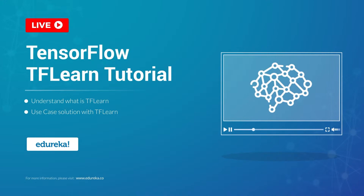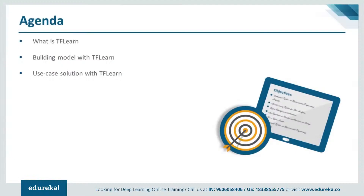Hello everyone, let's get started. We'll be discussing a few things about TF-Learn, which is a wrapper. The agenda covers: what TF-Learn is, building models in TF-Learn, and three use cases — MLP, CNN, and RNN. We also have examples for autoencoders and GANs. Additionally, I've included a section on different optimization algorithms, including RMS prop and its role in tackling gradient exploding and vanishing problems.